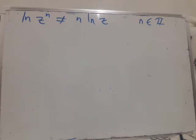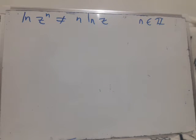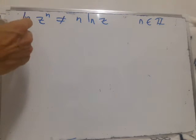It turns out that log of z to the n is not equal to n times log of z, in that the set of possible values of this does not equal the set of possible values of this. This is easy to show with a counterexample.